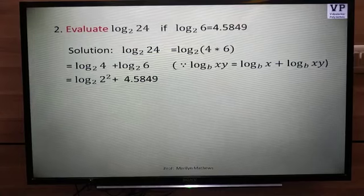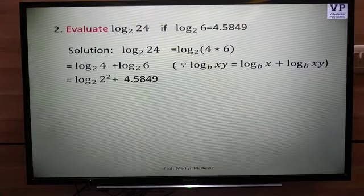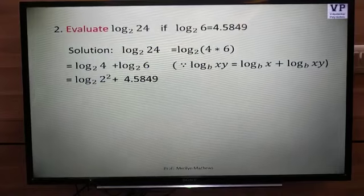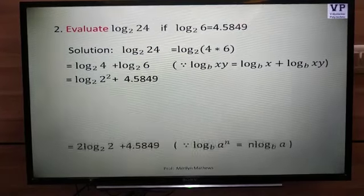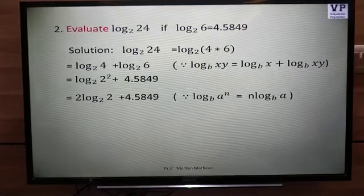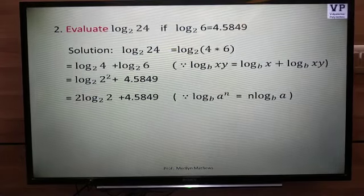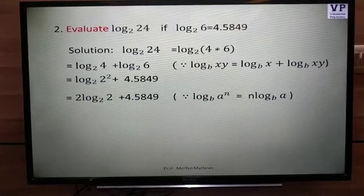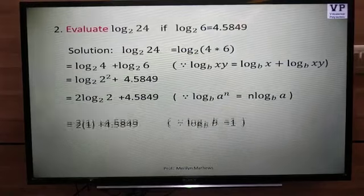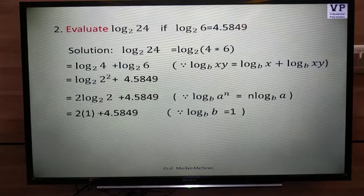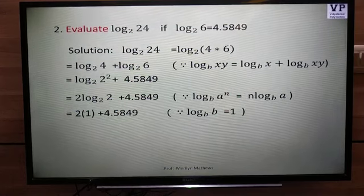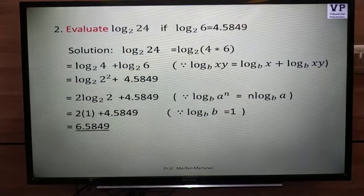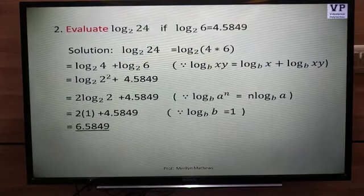Also the trick in writing log 4 base 2 is as writing log 2 square to the base 2 plus 4.5849 already given in the question. Again we have the power formula, so 2 shifts to the start and hence we get 2 log 2 base 2 plus 4.5849. Here we have 2 into 1 because the number and the base are same, plus 4.5849. Hence giving the final value as 6.5849. Hence this is the value of this particular logarithm. Thank you.